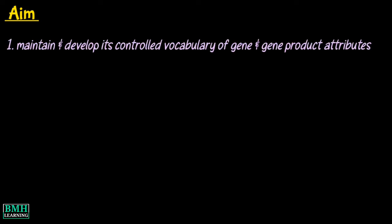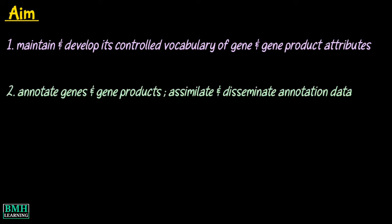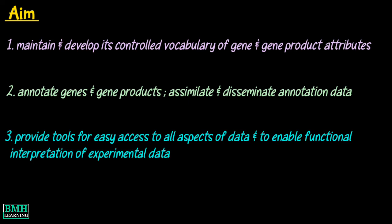The aim of the project is to maintain and develop its controlled vocabulary of gene and gene product attributes. Second, to annotate genes and gene products and assimilate and disseminate annotation data. And third, to provide tools for easy access to all aspects of the data provided by the project, and to enable functional interpretation of experimental data.